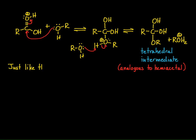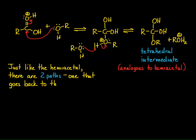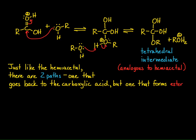The tetrahedral intermediate, depending on its stability, may be isolatable or can undergo further reaction. In acidic conditions it undergoes further reaction, just like we saw with hemiacetals. There are two paths: one is protonation of the OR group and then it coming off, which would take you back to the carboxylic acid. The other is protonation of one of the OH groups, and in that case we generate an ester.